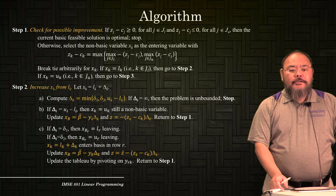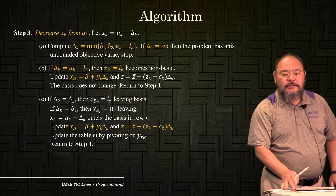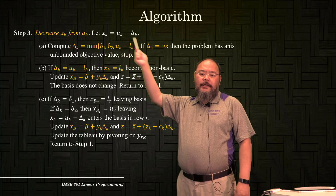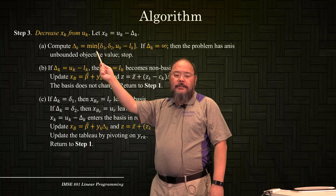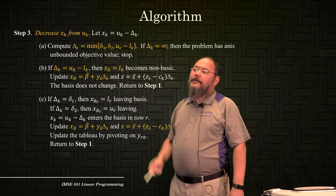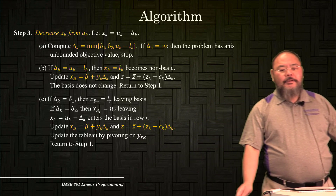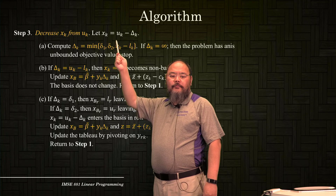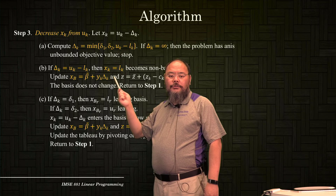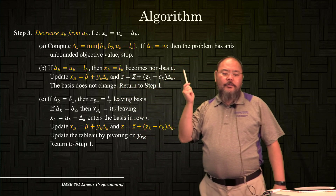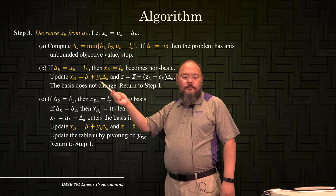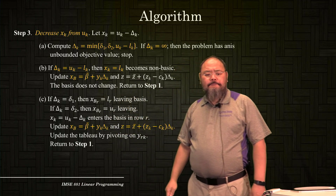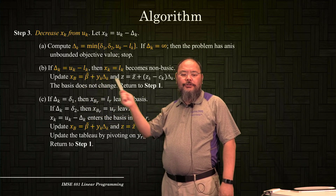If the chosen variable is currently at the upper bound, we go to step three. The value can be decreased by delta_k. Again, we compute delta_k based on delta one, delta two, and uk minus lk. If delta_k is infinity, the problem is unbounded. If delta_k is chosen from uk minus lk, the non-basic variable xk moves from its upper bound directly to its lower bound and remains a non-basic variable. We update the current basic solution and objective function value accordingly, and the basis does not change.